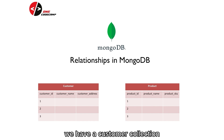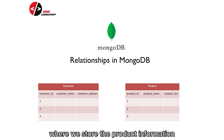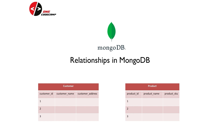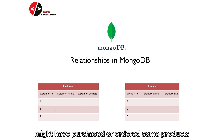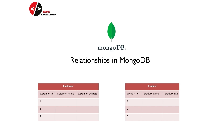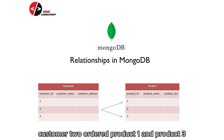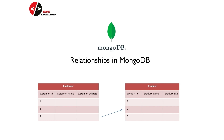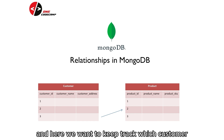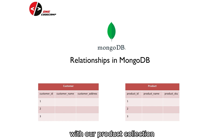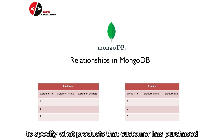We have a customer collection where we store the customer details, and a product collection where we store the product information that we are selling in our shop. Each customer might have purchased some products. Customer 1 might have ordered product 1 and product 2. Customer 2 ordered product 1 and product 3. And customer 3 has only ordered product 2. We want to keep track of which customer has bought which products, so we need to relate our customer collection with our product collection.